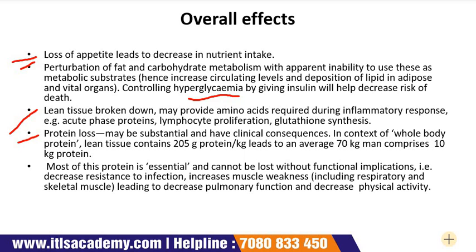Protein loss may be substantial and have clinical consequences. In the context of whole body protein, lean tissue contains approximately 205 grams of protein per kg, meaning an average 70 kg man comprises about 10 kg of protein. Most of this protein is essential and cannot be lost without functional implications, including decreased resistance to infection and increased muscle weakness.